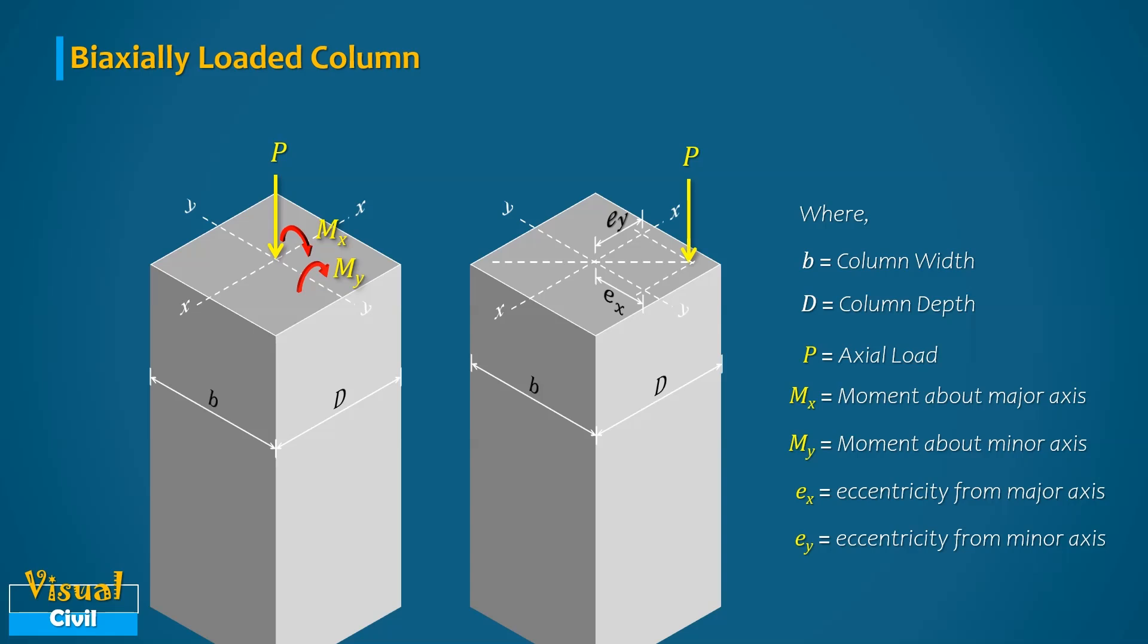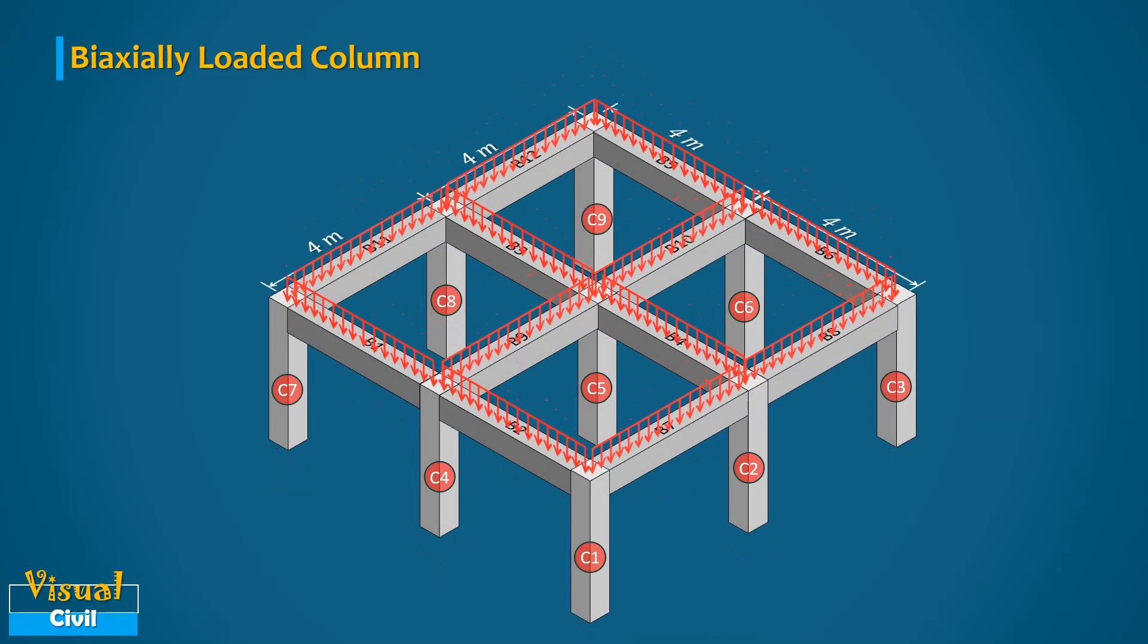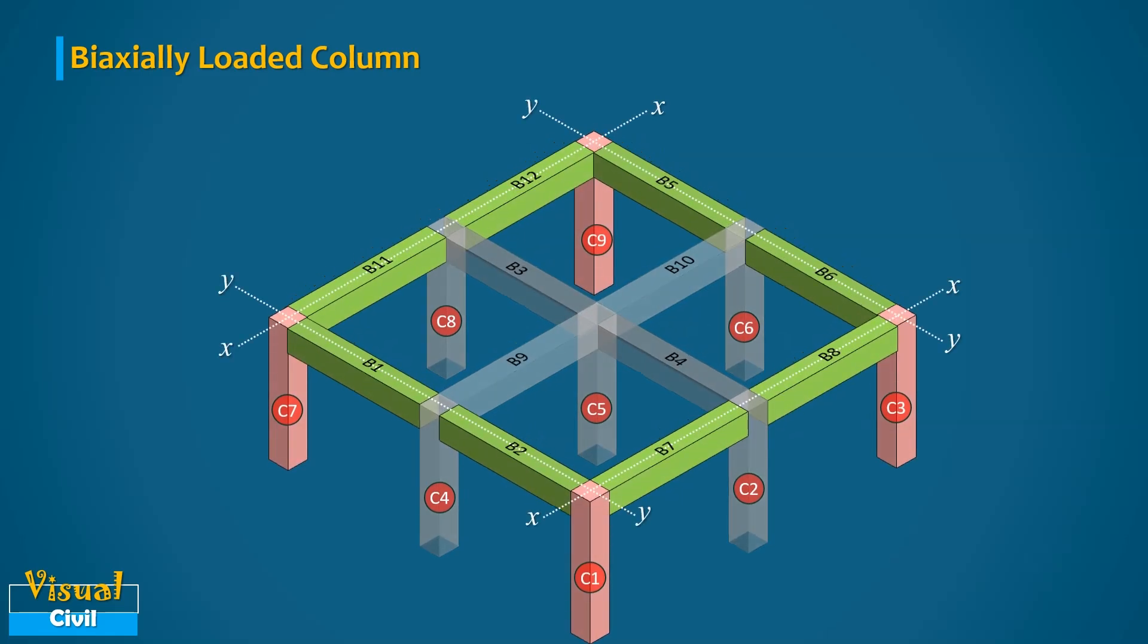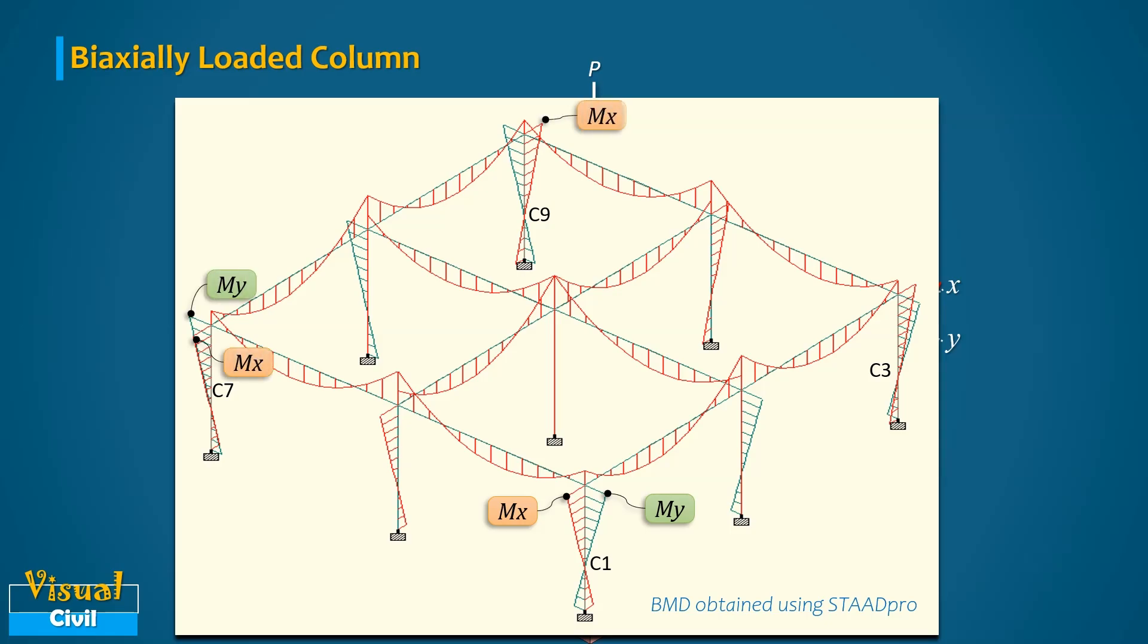Let us try to understand this by considering the same building frame which is earlier used in the previous section. Consider a corner column C1 which is connected to beam B7 and B2 along X-axis and Y-axis respectively. As the moment caused by both the beams are not balanced on the other sides, the column C1 will be subjected to biaxial moment. Similar, all other corner columns will also be subjected to biaxial moment due to same situation. This we can see in the bending moment diagram obtained through three-dimensional frame analysis in STATPRO software.